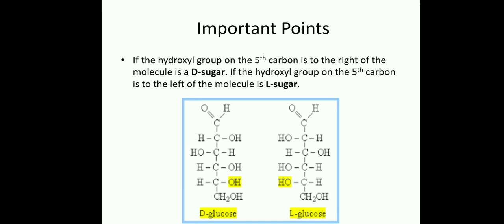So the first important point is D-glucose and L-glucose. In class plus 2, you all studied about isomerism in chemistry. There are two types of isomerism: first one is structural isomerism and the second one is stereoisomerism.